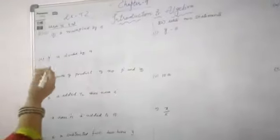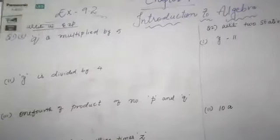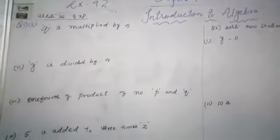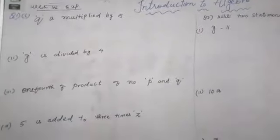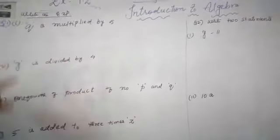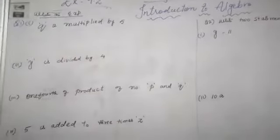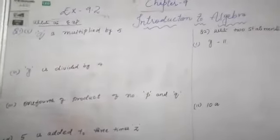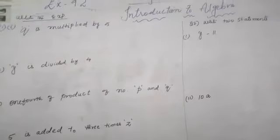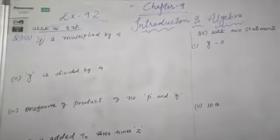Like, for example, here question number 1 is given: write the expression for the following statements, children. Here some statements are given — question number 1 to question number 7. For this you have to write an expression.